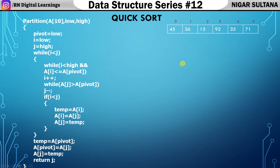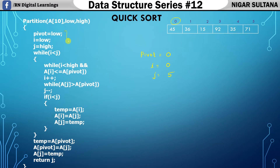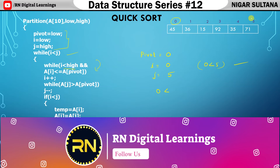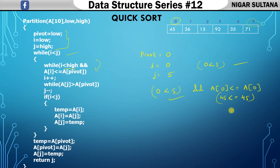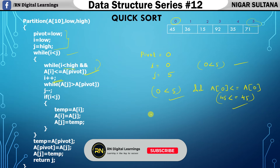So pivot value equals low, which is index zero (value 45). I equals zero, j equals five. Now check the condition: is i less than j? Zero is less than five — true, so we enter the loop. The inner while condition checks: is i less than high (0 < 5), and is a[i] less than or equal to a[pivot]? a[0] is 45, which equals 45 — both conditions are true, so increment i.